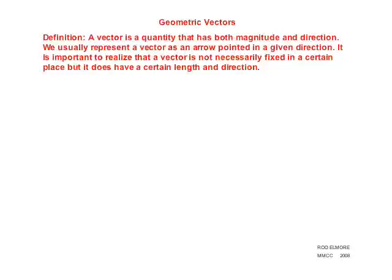Geometric vectors. Definition: A vector is a quantity that has both magnitude and direction. We usually represent a vector as an arrow pointed in a given direction. It is important to realize that a vector is not necessarily fixed in a certain place, but it does have a certain length and direction.